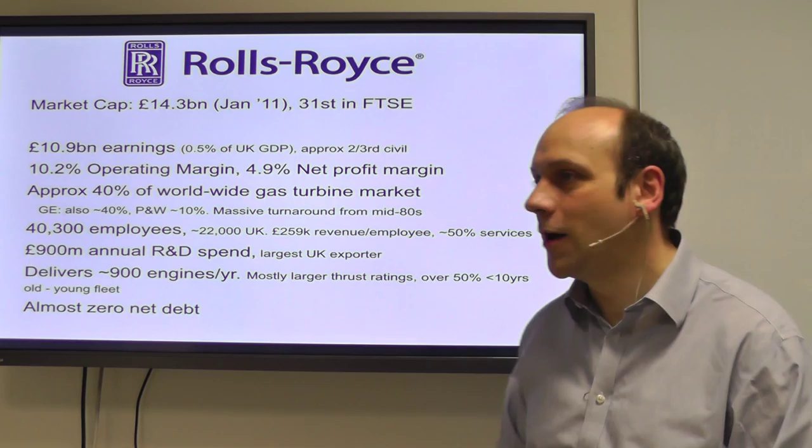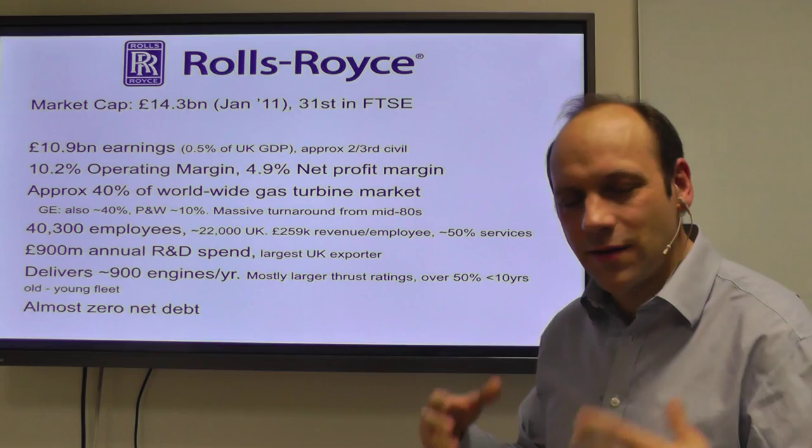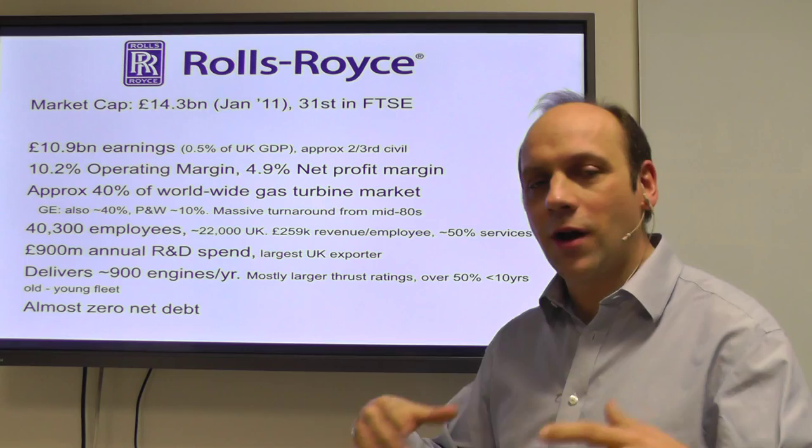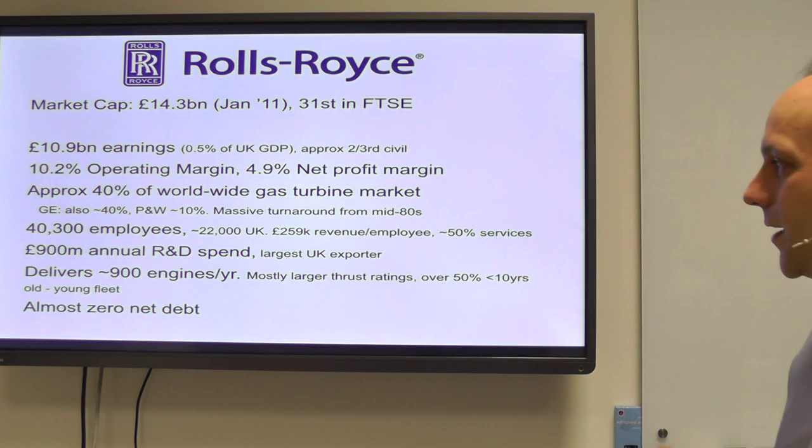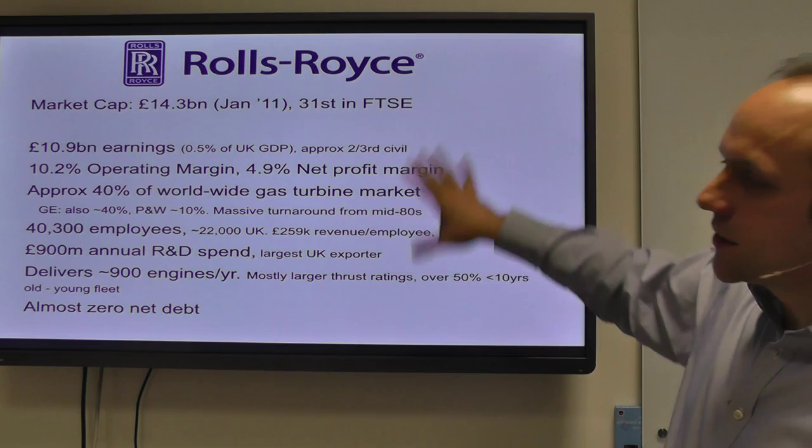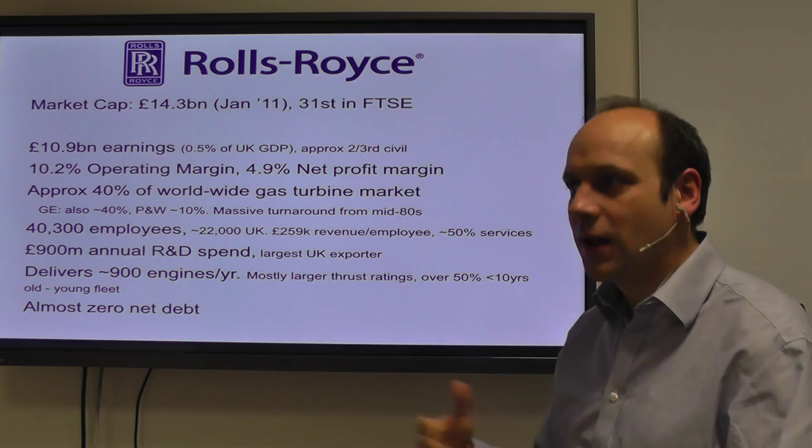They deliver something like a thousand engines a year — not a big number. An auto manufacturer, you start getting excited if you deliver more than a hundred thousand cars a year, not a thousand engines a year. So this is a relatively small production. Rolls has expanded a lot in the last 20 years, so they have a fairly young fleet, which also means they have quite a long service base that will come and gives them growth in the future.